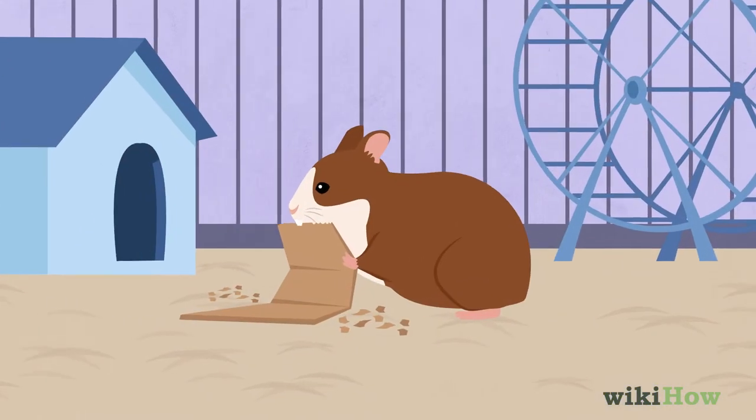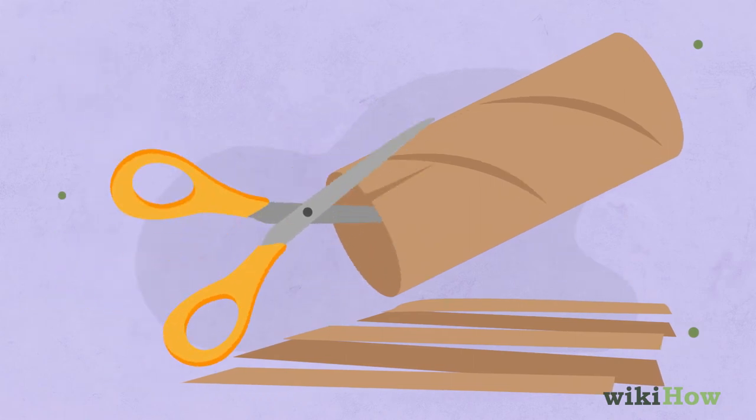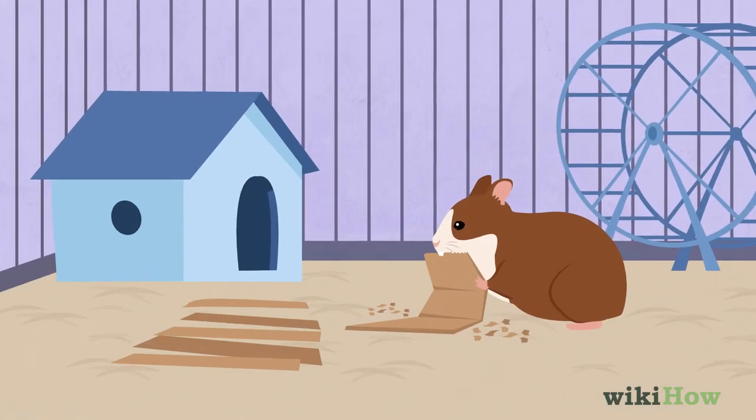Hamsters enjoy shredding strips of cardboard for bedding. Cut the inner tube from a paper towel or toilet paper roll into strips and place them in the hamster enclosure.